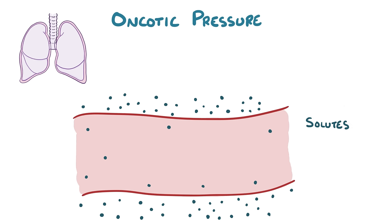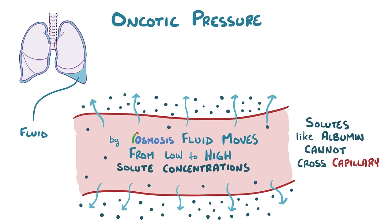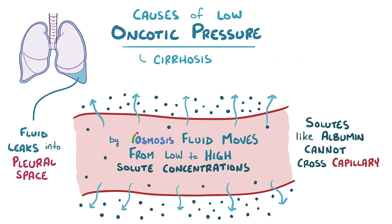Oncotic pressure results from the inability of large solutes like albumin to move across the capillary wall. By osmosis, fluid moves from areas of low solute concentration to high solute concentration. Fluid therefore flows out of the capillaries and leaks into the pleural space when there is decreased oncotic pressure in the blood vessels. Two causes of low oncotic pressure are cirrhosis, where the liver makes fewer proteins, and nephrotic syndrome, where proteins are lost in the urine.